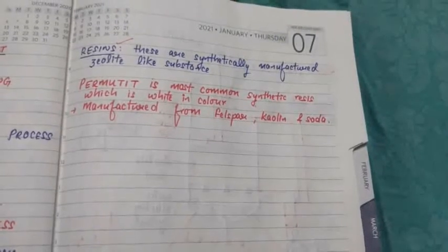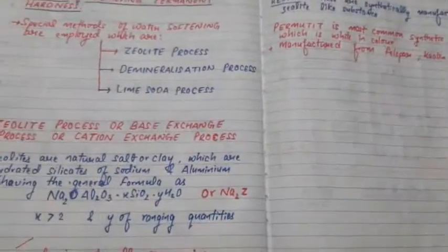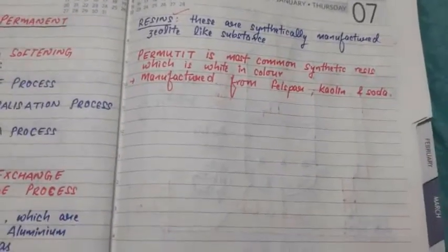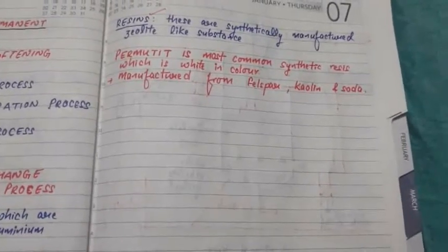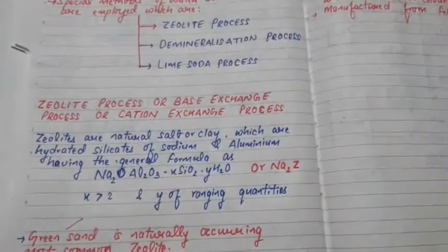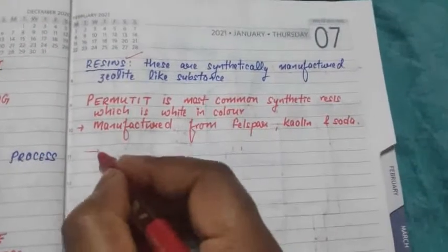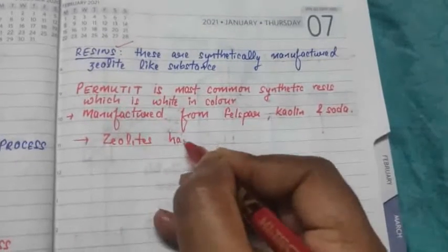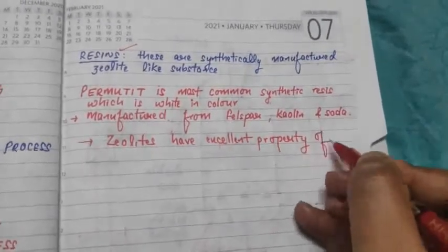Zeolites are used in water softening because zeolites and resins have an excellent property of exchanging their cations. In Na₂Z, sodium is the cation, and zeolites can easily replace this sodium with other cations from the water.